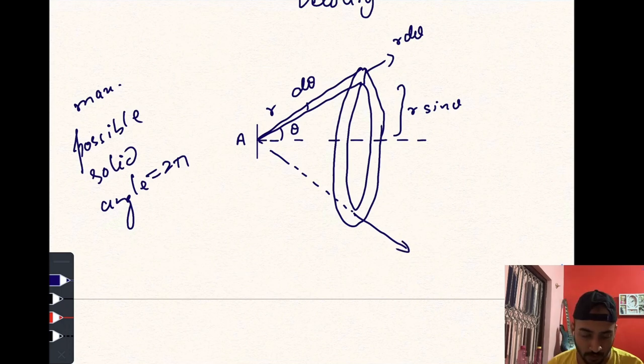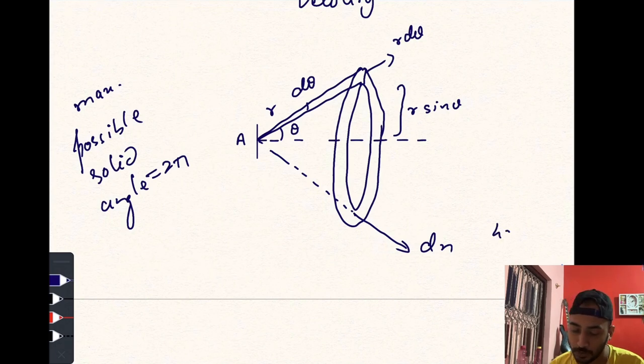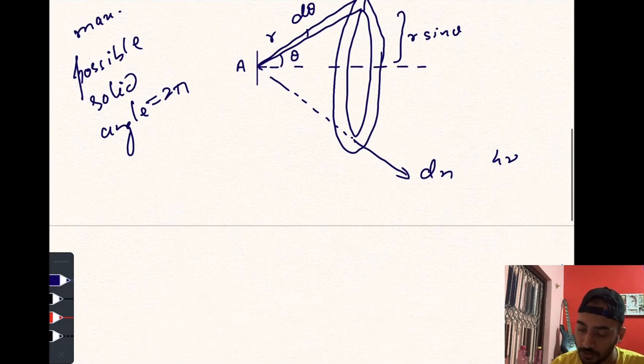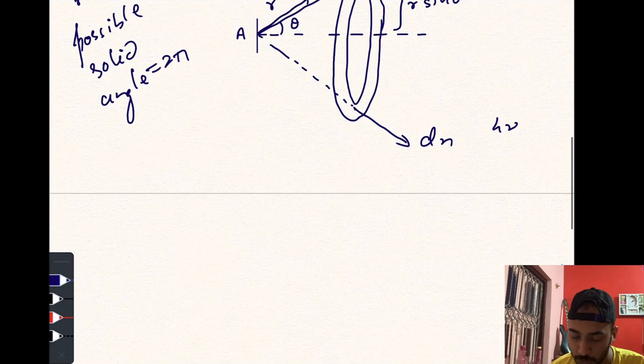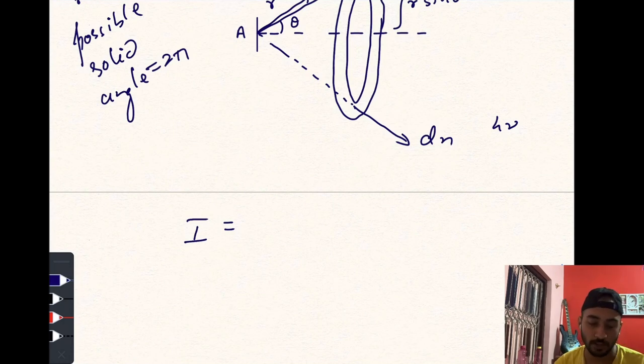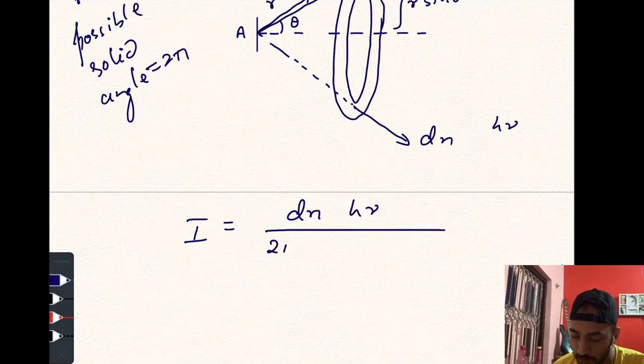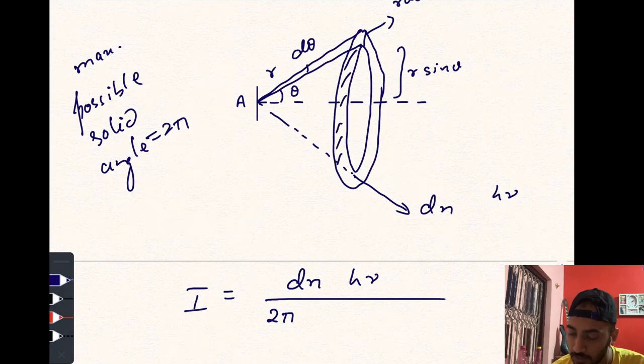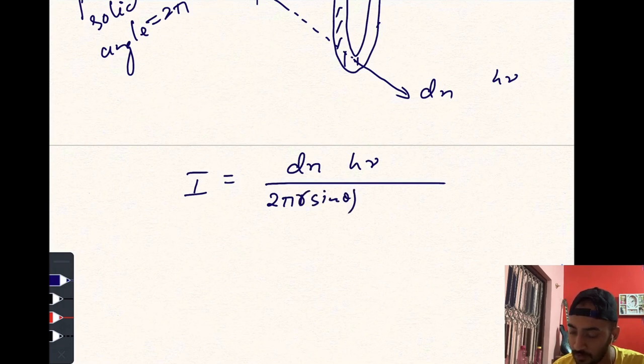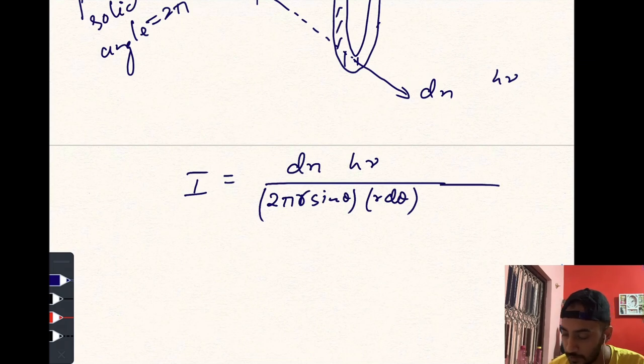Let the number of photons be dn, and each photon will have energy of hν. Now, due to this throw of photons of energy hν, let the intensity at this region be I. The intensity, according to the definition, is the amount of energy radiated per unit area per unit time. So total number of photons times energy of each photon per unit area—that means this area of the ring, that is 2π r sin θ times r dθ—per unit area per unit time normally. This is θ, so this would be cos θ.